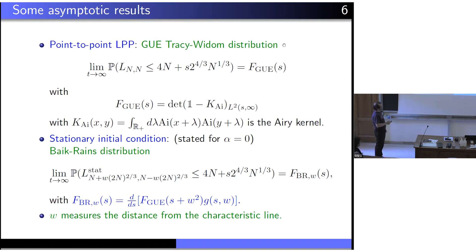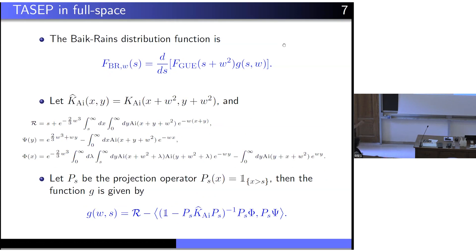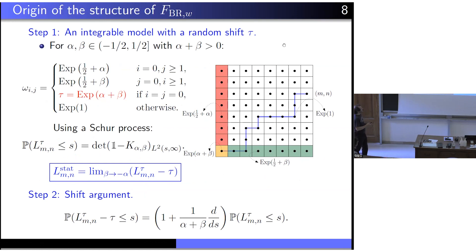The Baik-Rains distribution has a specific structure. It is a derivative of the product of the GUE Fredholm determinant F_GUE (the one you get from point-to-point without the boundary) times a function g. The function g is essentially minus the resolvent applied as a scalar product with a function — the resolvent of a kernel times another function. This structure arises from the integrable structure of the model.